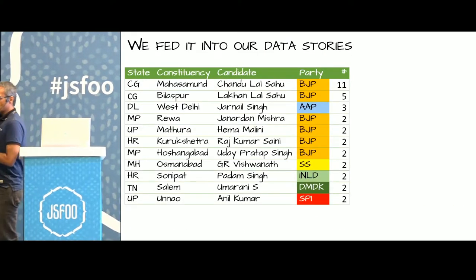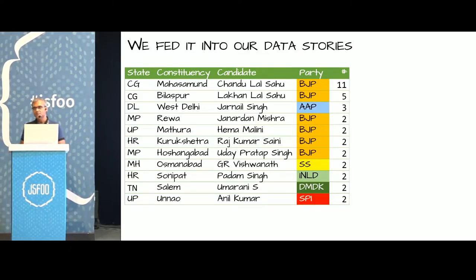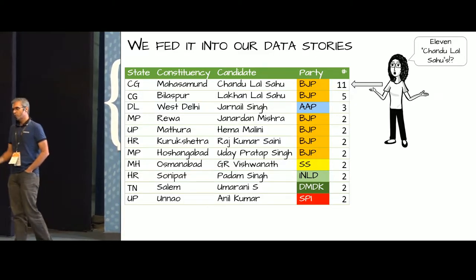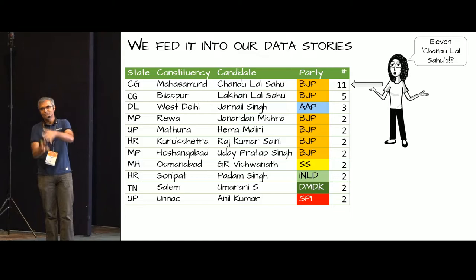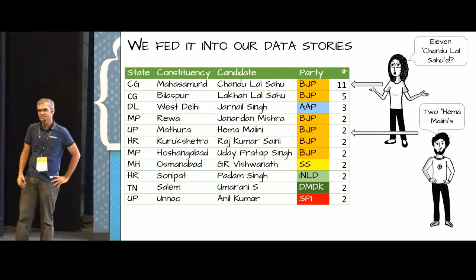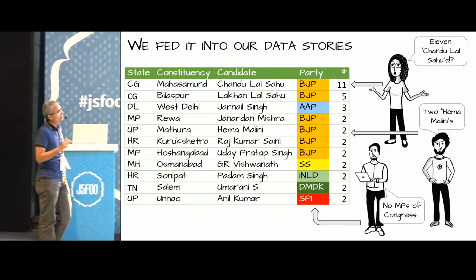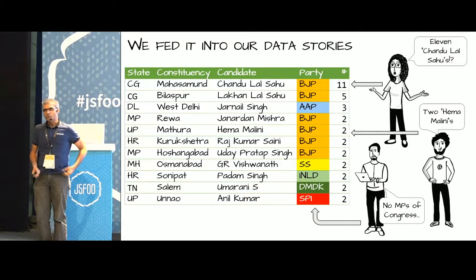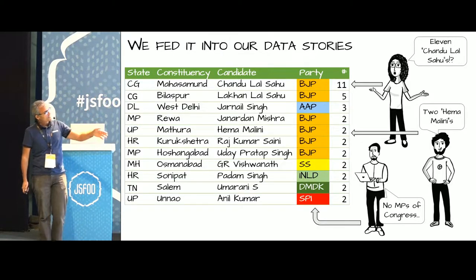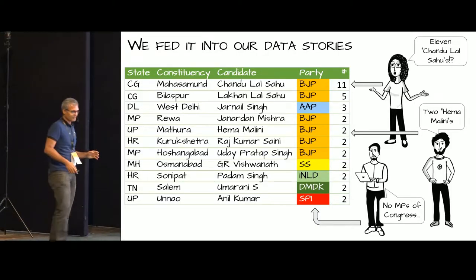We started using this in our stories. We took a 2014 story from the Indian parliamentary elections where the number of candidates with the same name in different constituencies was pretty odd. For instance, there were 11 people called Chandu Lal Sahu in Mahasamund — exactly the same name. One was the sitting MP and the remaining 10 were independents drawn in to create confusion. There were two Hema Malinis standing in Mathura. You'll notice the party most affected by this strategy — if Hema Malini of BJP finds another Hema Malini in the same constituency, people might get confused and BJP's vote is affected. Interestingly, Congress was not affected by the strategy at all.